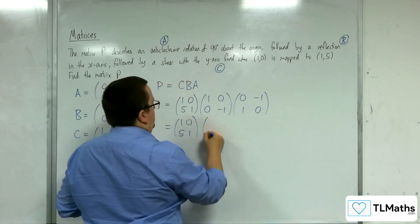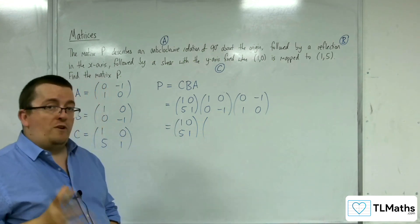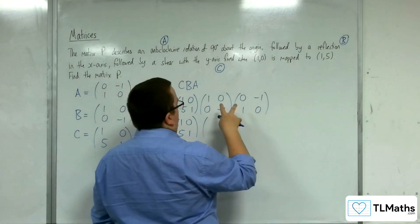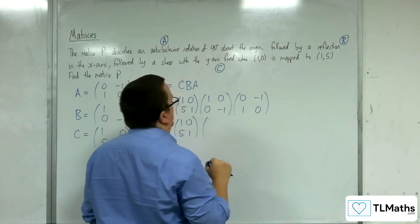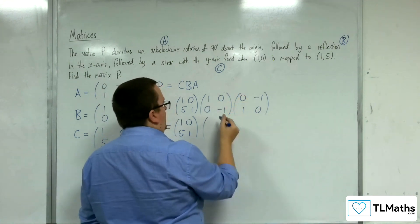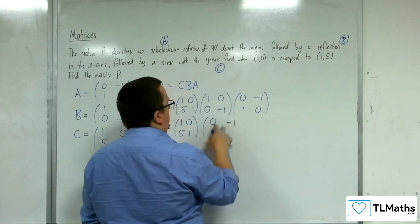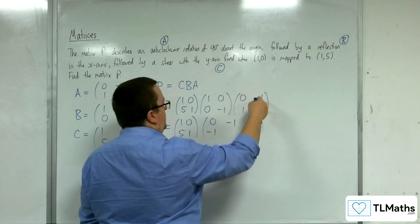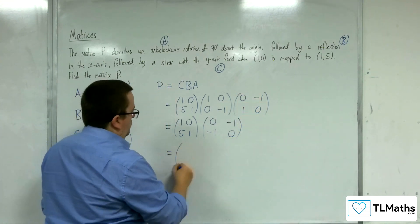So what I'm going to do is I'm going to take each of these in turn. I'm going to multiply those two matrices together first. It doesn't matter in which order I do this. So 1-0 times 0-1 gets me 0. 1-0 times minus 1-0 gets me negative 1. 5-1 times 0-1 gets me negative 1, and 5-1 times minus 1-0 gets me negative 5.